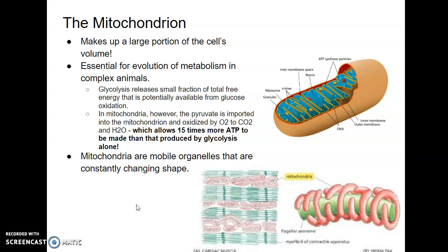A couple characteristics about the mitochondrion: one is that it makes up a very large portion of the cell's overall cytoplasmic volume. The second thing is that it's very essential for the evolution of metabolism as a whole in complex organisms such as our cells. If we didn't have the mitochondrion, we would have to rely on anaerobic glycolysis for the production of ATP, and we certainly wouldn't have as much ATP produced per glucose molecule.